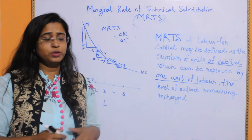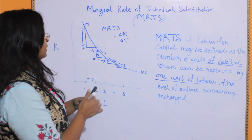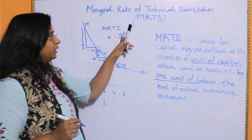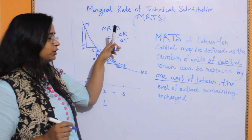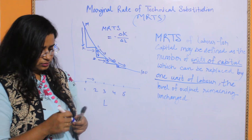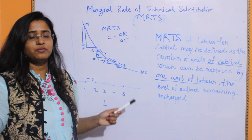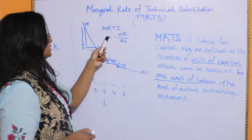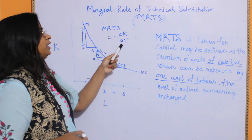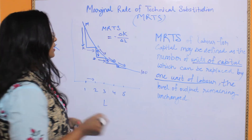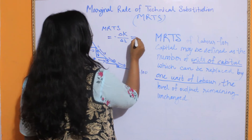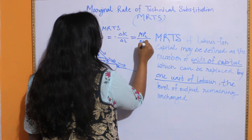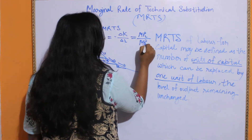The MRTS is shown by the formula delta K upon delta L, and we put a negative sign because the curve has a negative slope. You can also write it as the marginal productivity of L upon the marginal productivity of K.